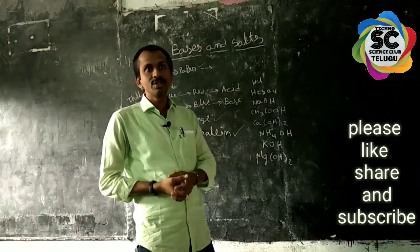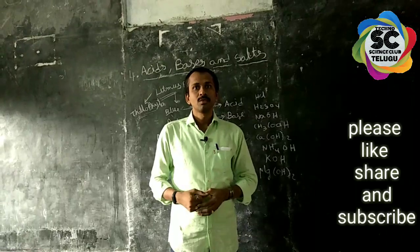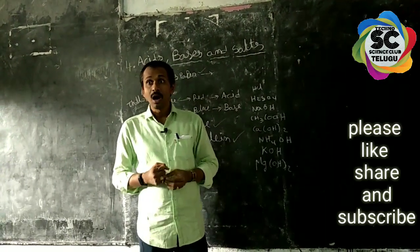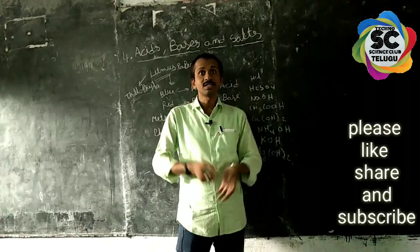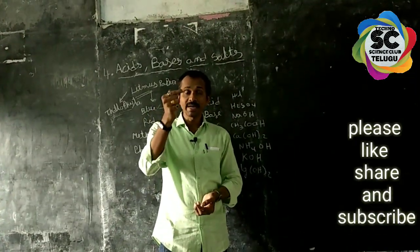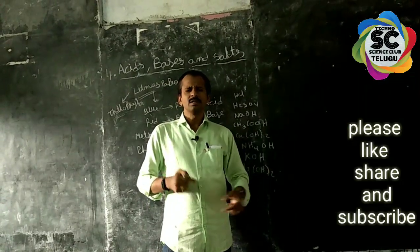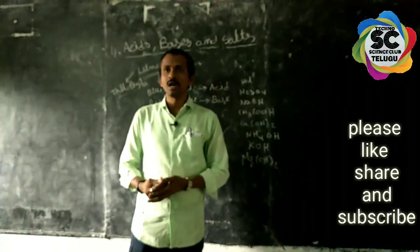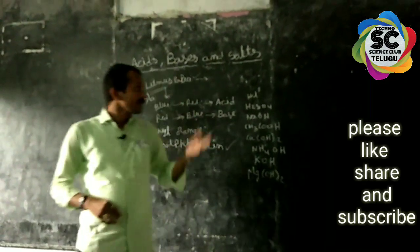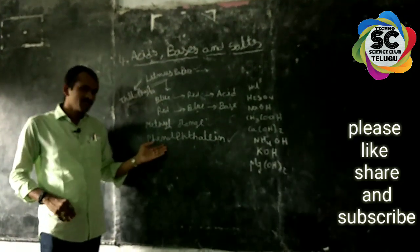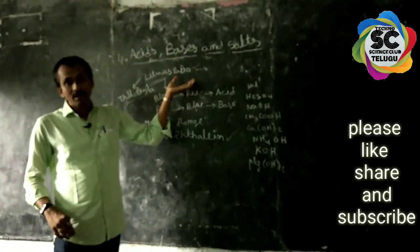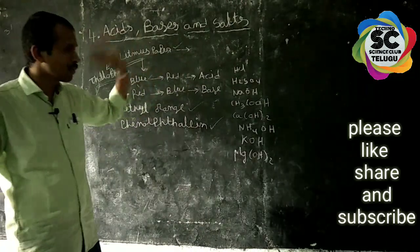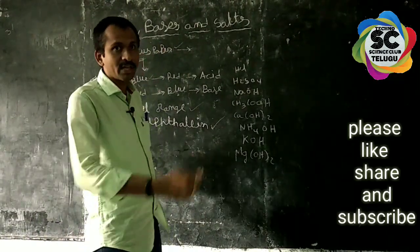In 7th class we also used some colored flowers as natural indicators. These colored flowers are also used as indicators. Litmus paper, methyl orange, and phenolphthalein are unnatural indicators. We will check the acids and bases. In 7th class we will do the Chasenet activity.